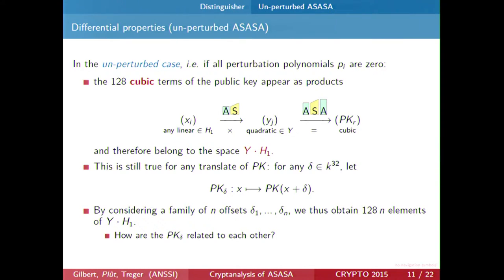There are only 128 outputs, which is not enough to identify the space, but we can generate more elements of this space by looking at translations of the public key. We translate the input by some constant delta and look at the resulting public key, which is just the translation of the polynomials. This is still valid because translating by a constant does not change the linear terms or the leading quadratic terms of the S-boxes. So if we look at a family of n differentials delta_1 to delta_n, we obtain 128n elements of this space.